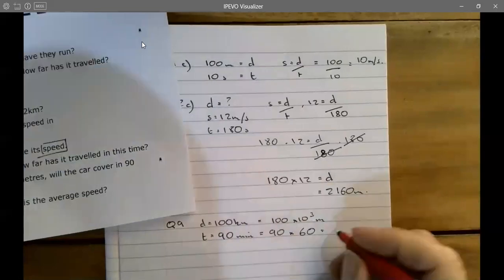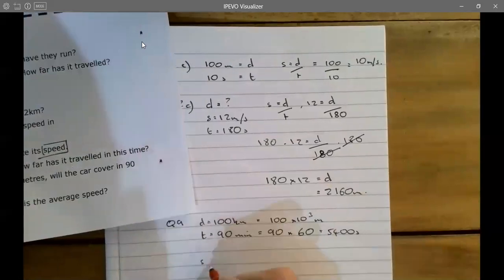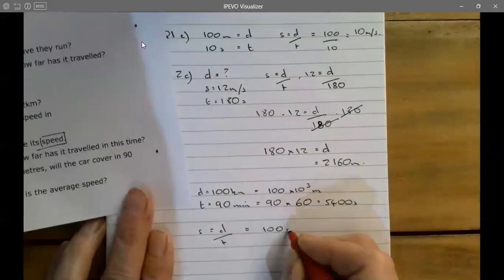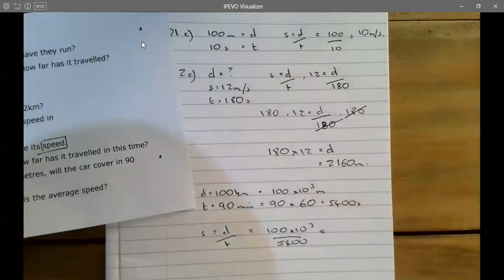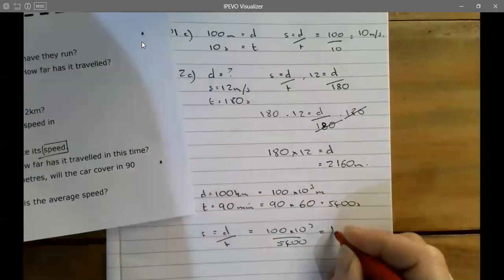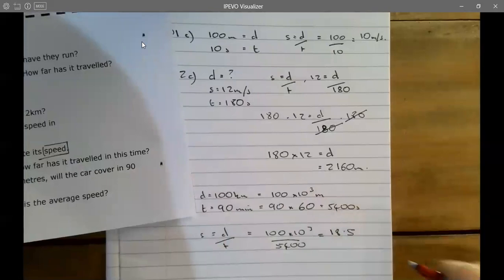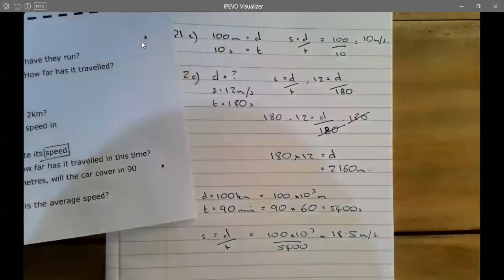Now we've got speed is equal to distance over time. We now insert and we have 100 times 10 to the 3 divided by 5,400, which will give me 18.5 meters per second, which sounds about reasonable, 36 miles an hour.